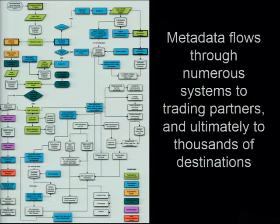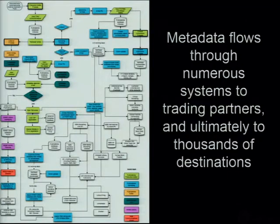ONIX can be literally hundreds of fields, and within those fields there are hundreds and even thousands of variations.